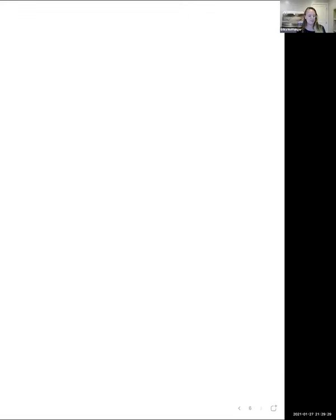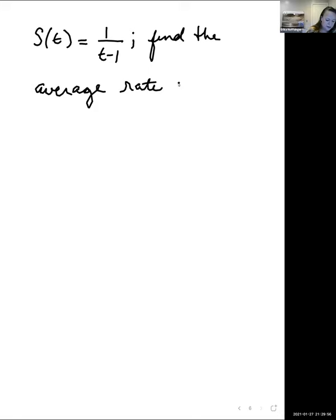We're going to look at another example of finding the average rate of change for a function. This time it's a function in terms of t: S(t) equals one over t minus one. We want to find the average rate of change on the interval negative five to negative two.